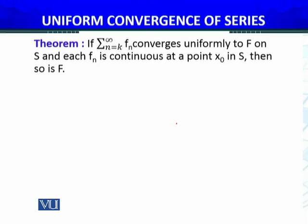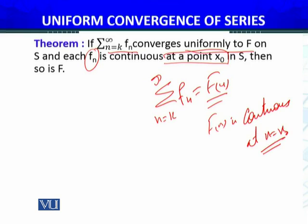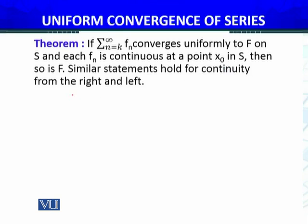This is the recall. Now, what is the statement about series of functions? The statement is: if summation from n equals k to infinity of f_n converges uniformly to f — meaning this sum equals f(x) — and each f_n is continuous at a point x₀ in S, then so is f. That means f(x) is continuous at x equals x₀.